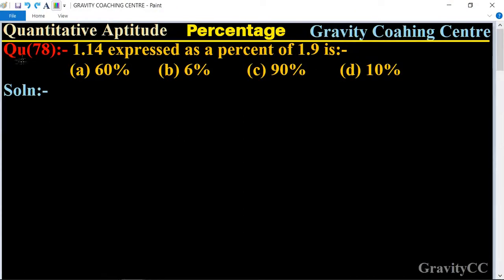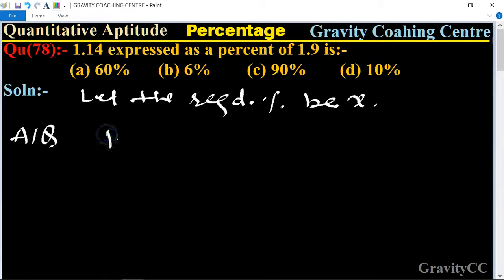Quantitative aptitude, chapter percentage, question number 78: 1.14 expressed as a percentage of 1.9. First, let the required percent be x. According to the question, 1.14 expressed as x percent of 1.9 implies that...